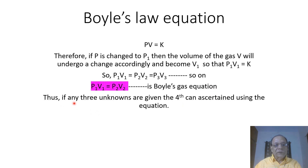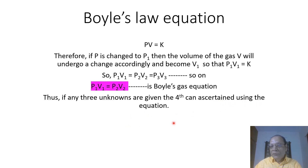P1V1 = P2V2 is known as Boyle's gas equation. Thus, if any three of the four unknowns are given, the fourth can be ascertained using this equation, as we shall see in the numericals.